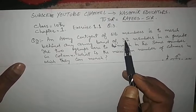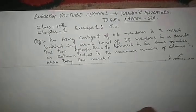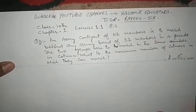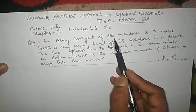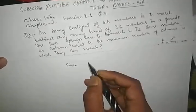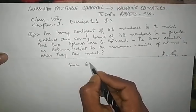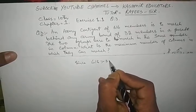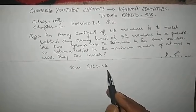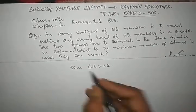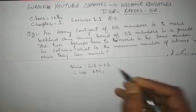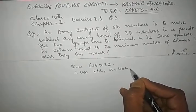So we will find the HCF of the two numbers. Since 616 is greater than 32, therefore we use Euclid's Division Lemma, which states: a is equal to b into q plus r.